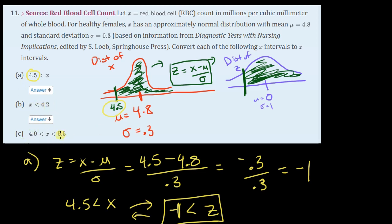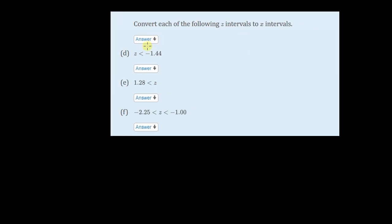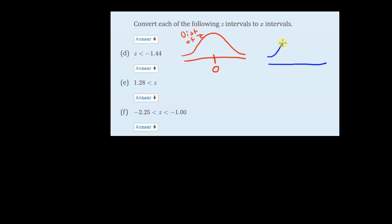Parts B and C are very similar — basically plug in the different numbers and figure out what the corresponding Z value is. Next, they said let's start with a Z distribution — normally distributed, centered on 0 — the distribution of Z, and then convert that to the distribution of X, which is a pretty narrow-looking distribution centered on 4.8.